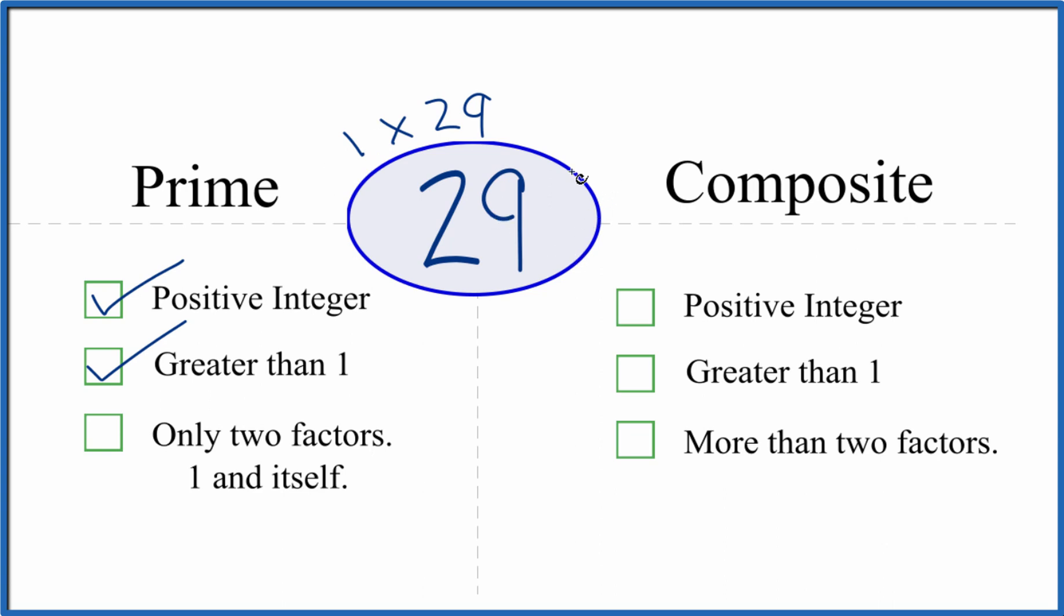It turns out that there aren't any other numbers that divide evenly into 29. So there are only 1, 2 factors. That means 29 is a prime number.